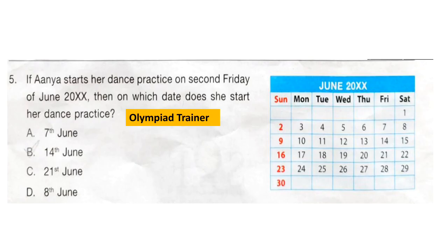Question 5: If Anya starts her dance practice on the second Friday of June 20XX, then which date does she start her dance practice? A calendar is shown here. You have to find out the second Friday and which date it falls on. The correct answer is option B: 14th June.